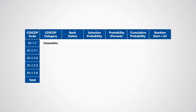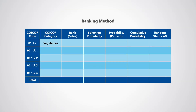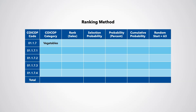This table illustrates how to apply the ranking method. First, the items are ranked in order of importance. For each of the vegetables, staff use judgment to determine the order of the vegetables from largest to smallest, based on sales.